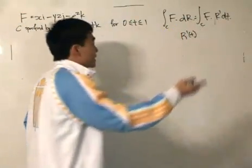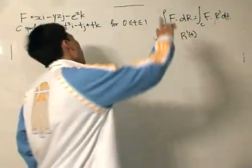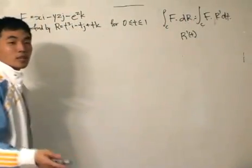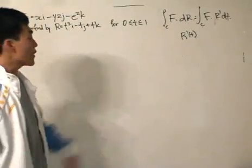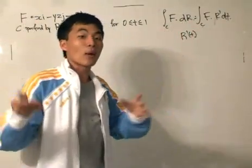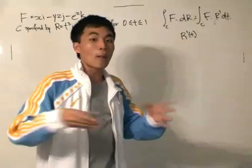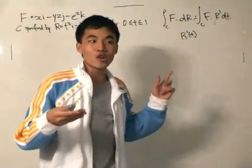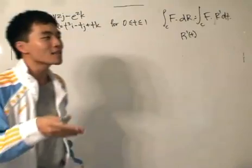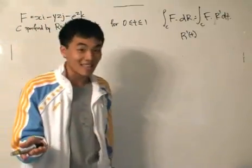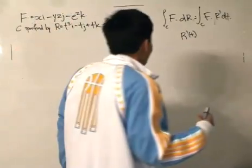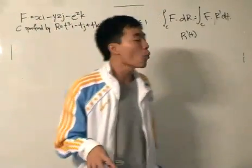So you first differentiate r, then form the dot product. After that, you make the substitution because the vector field is given in terms of the x, y, and z vector components. The vector field is based on multiple variables x, y, and z. It seems very intimidating, but you will see it's quite easy after a while.